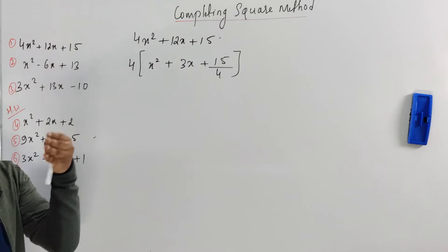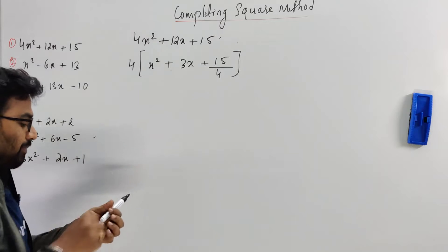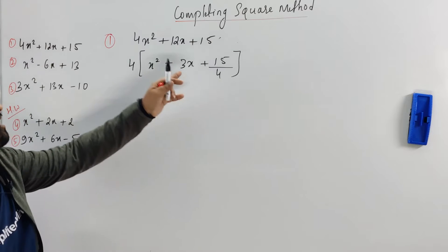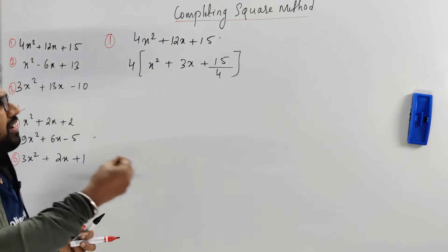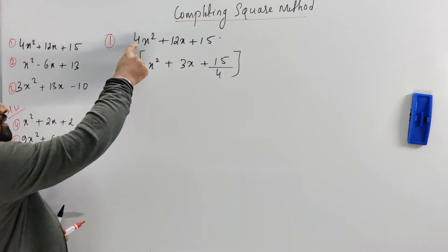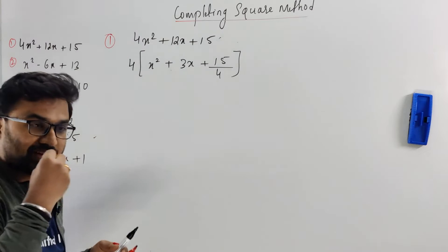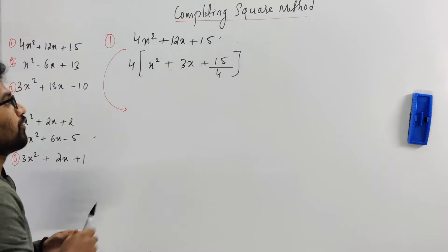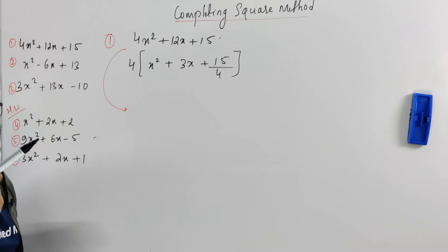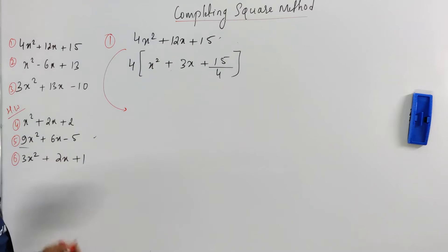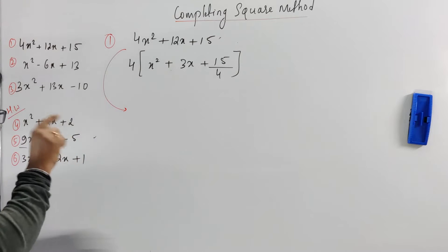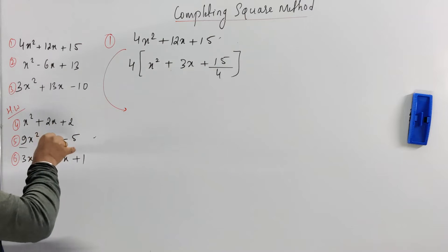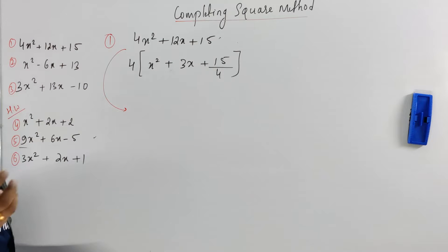If you have a coefficient, you have to take it out — that's the general method. The fraction is a bit of a headache because you have to square and multiply and remove. Instead, if you already have a coefficient like four or nine — in relations and functions, usually every question has that — you can use another method. For example, 9x squared plus 6x minus 5 from relations and functions — the question was: find the inverse function.